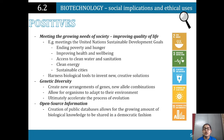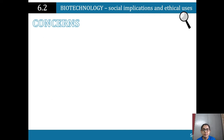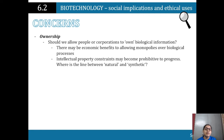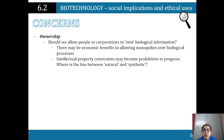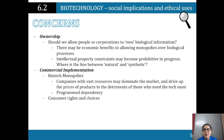Open source information and the creation of public databases allows the growing amount of biological knowledge to be shared in a democratic fashion. However, concerns arise around ownership — should people or corporations be able to own biological information? There may be economic benefits to allowing monopolies over biological processes, but intellectual property constraints may become prohibitive to progress. There is a huge debate about the food we eat and where the line between natural and synthetic lies.